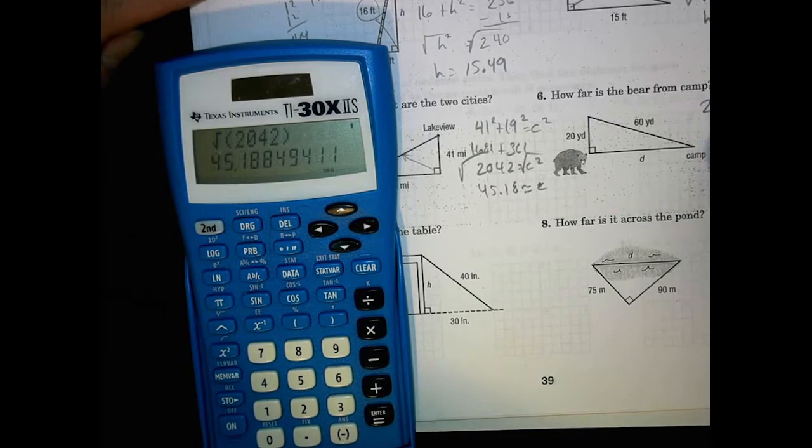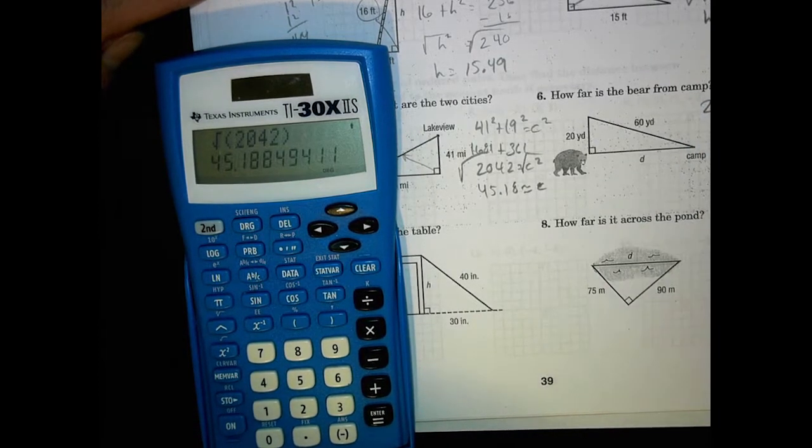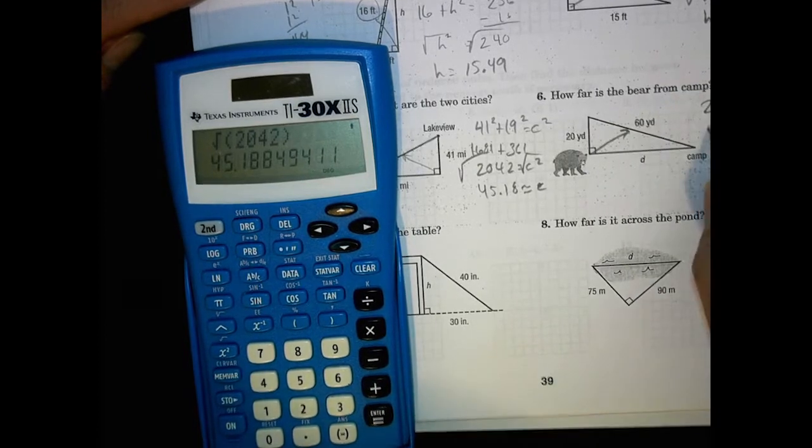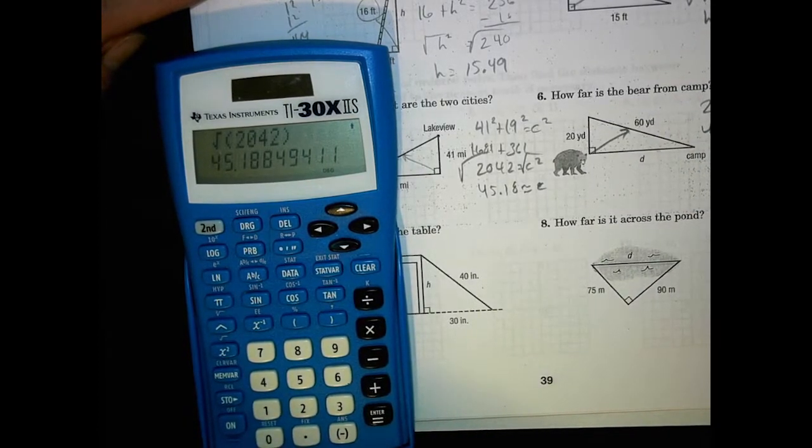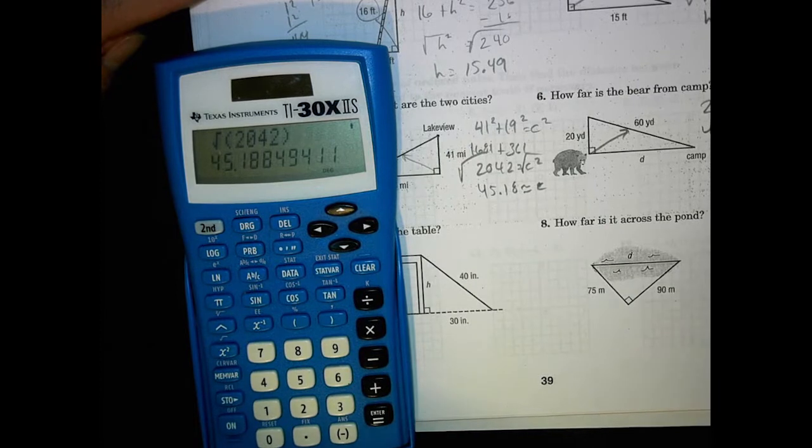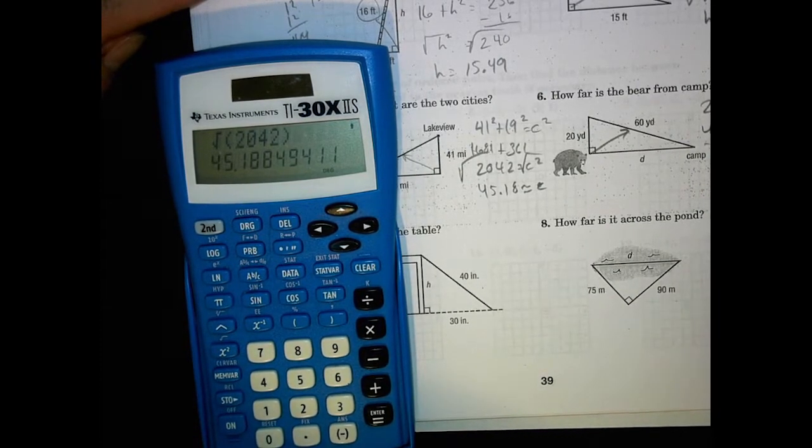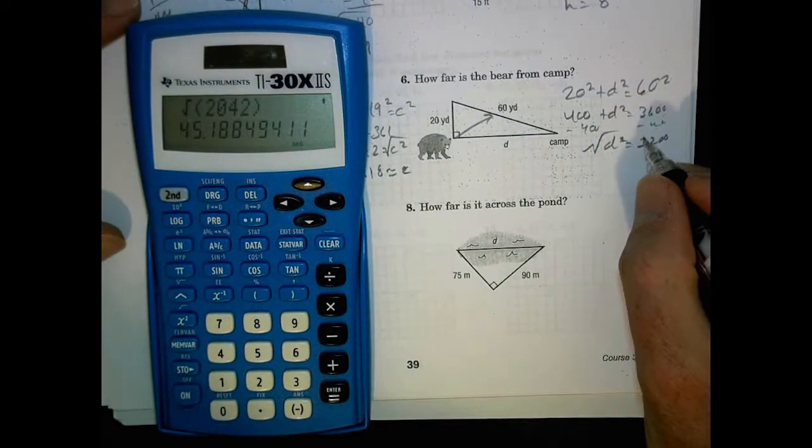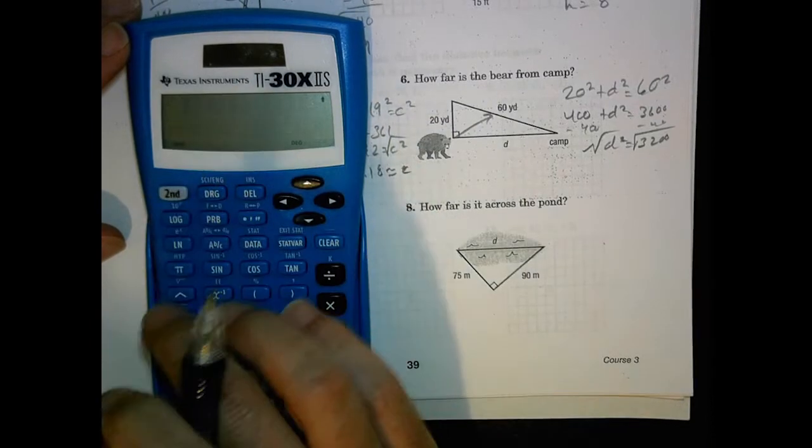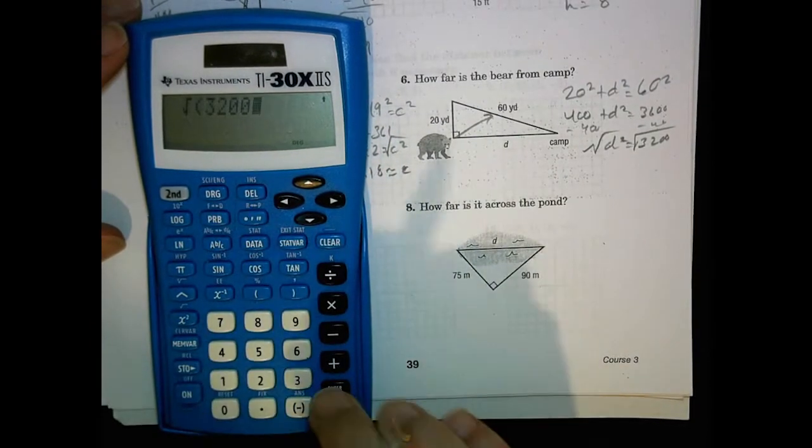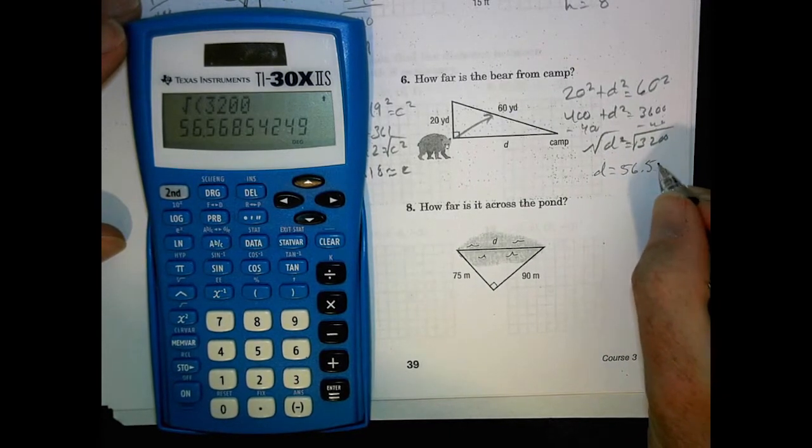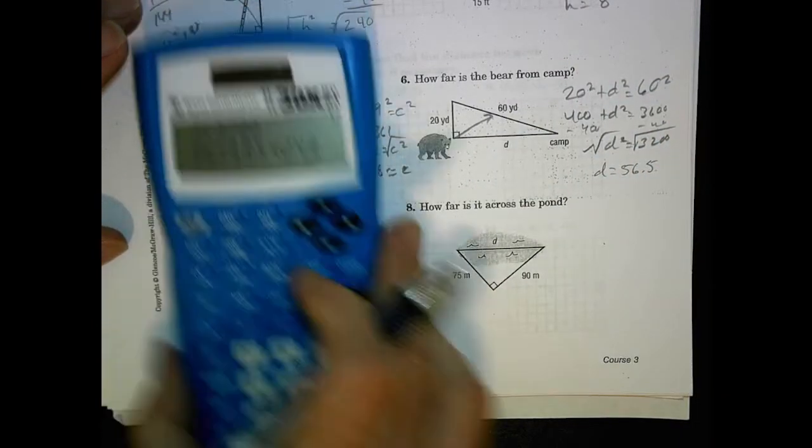Number 6. We have 20 squared plus the d squared is going to be equal to our hypotenuse 60 squared. So 400 plus d squared equals 3600. Subtract 400. Subtract 400. D squared equals 3,200. Whoops. Ran off the paper over there. Square root of both sides. Square root of 3,200. It's going to be about 56.5. Fantastic.